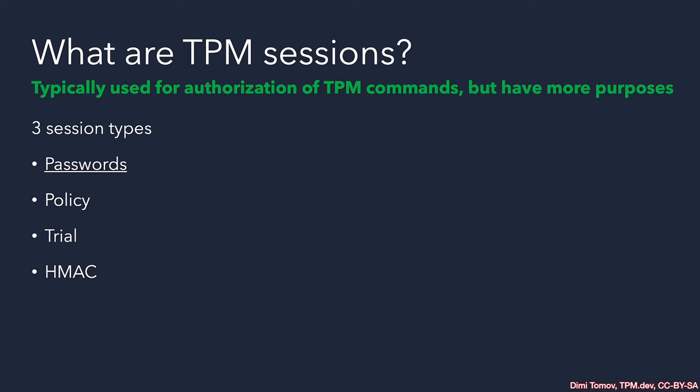Therefore, we can use an HMAC session to protect the communication. An HMAC session takes the authorization value from an object to feed its key derivation function to create a session key. Then we have a key exchange between the host and the TPM — this is a one-time transaction. Once this happens, the HMAC session refreshes with a nonce from the caller and from the receiver, meaning from the host and from the TPM. This is to prevent replay attacks.